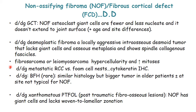Third, considering the fibrous proliferation, is fibrosarcoma or leiomyosarcoma of bone — the tumor here is hypercellular with increased mitoses and pleomorphism. The next differential, considering the foamy histiocytes, is metastatic renal cell carcinoma, which also has foamy cells; however, in renal cell carcinoma the neoplastic cells are cytokeratin-positive. Next is benign fibrous histiocytoma of bone, which has the same histology but occurs in other sites and in older patients.